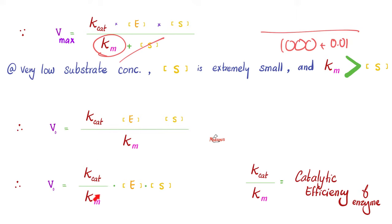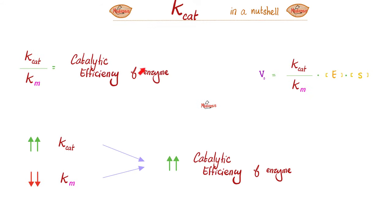And just to organize it, it becomes like this. K-cat over Km is the catalytic efficiency of the enzyme. The higher the ratio, the more efficient the enzyme. How can I increase the catalytic efficiency of the enzyme? By either raising the numerator or decreasing the denominator.